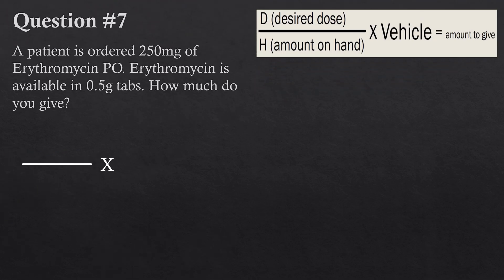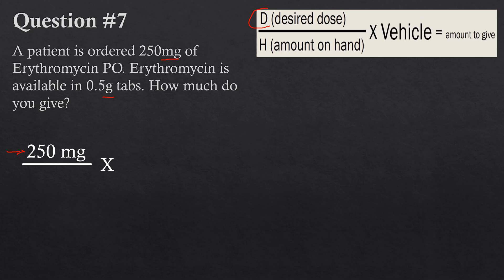Question seven: a patient has been ordered 250 milligrams of erythromycin PO. Erythromycin is available in 0.5 gram tabs — how much do you give? This question introduces something new: the units are different. In order for this formula to work, the units must be exactly the same. The desired dose is 250 milligrams on top — that's easy. But the bottom is in grams, and we can't mix units, so we have to convert 0.5 grams to milligrams, which is 500 milligrams.